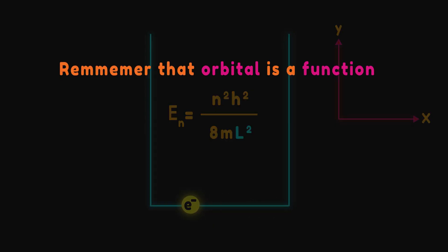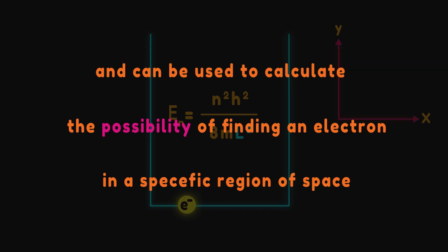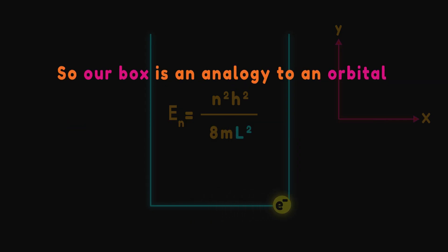Remember that an orbital is a function describing the location of the electron, and can be used to calculate the probability of finding an electron in a specific region of space. So our box is an analogy to an orbital.